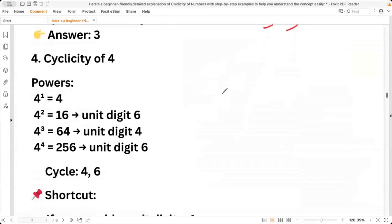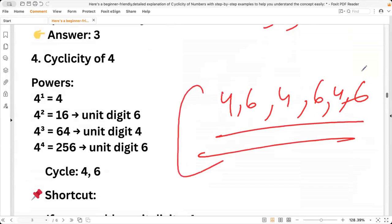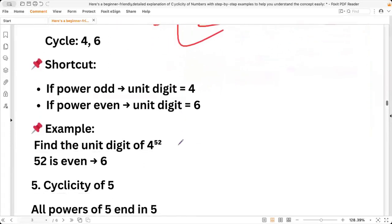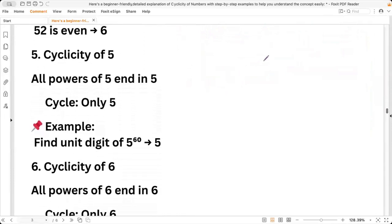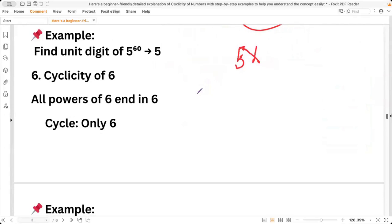Cyclicity of four is very simple. It goes in 4, 6, 4, 6. UPSC usually do not ask a question involving power four because it becomes easier. Cyclicity of five - every time if you multiply anything of five by itself, always the unit digit will be five. Cyclicity of six also, always unit digit will be six.